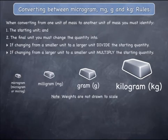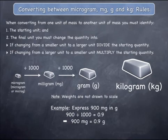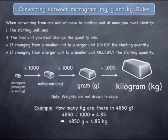Let's start by showing three examples where a smaller unit is changed into a larger unit. If you are changing a quantity from micrograms to milligrams, you must divide the starting quantity by 1000, as the example shows. If you are changing from milligrams to grams, you must divide by 1000, as shown. And if you are changing from grams to kilograms, you must divide the starting quantity by 1000, as illustrated.